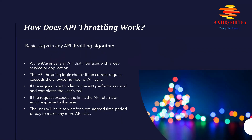So how does API throttling work? There are various algorithms for API throttling. Here are the basic steps in any API throttling algorithm. First, a client or user calls an API that interfaces with a web service or application. The API throttling logic checks if the current request exceeds the allowed number of API calls. If the request is within limits, the API performs as usual and completes the user's task. If the request exceeds the limit, the API returns an error response to the user. The user will then have to wait for a pre-agreed time period or pay to make any more API calls.